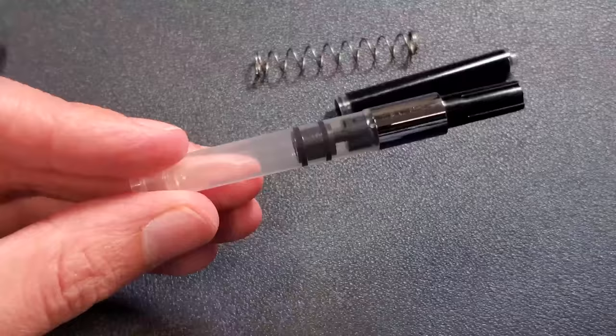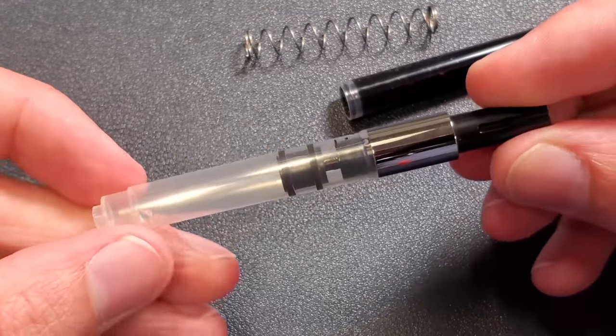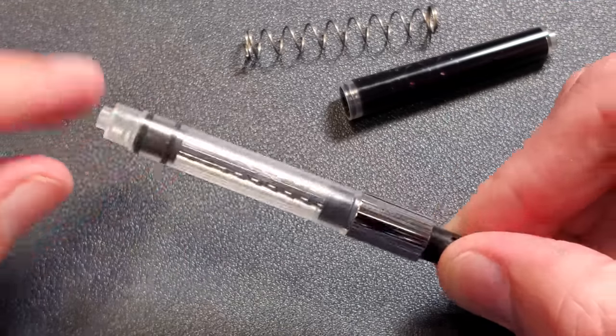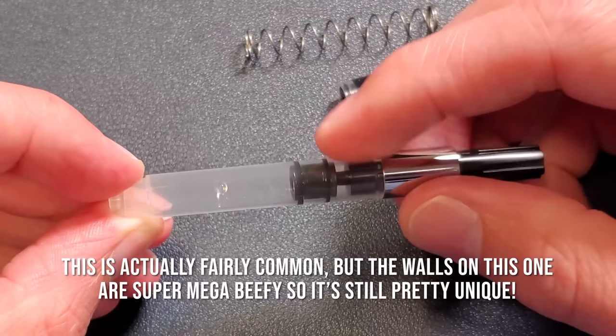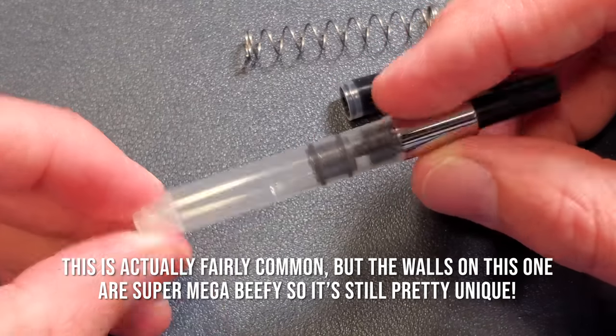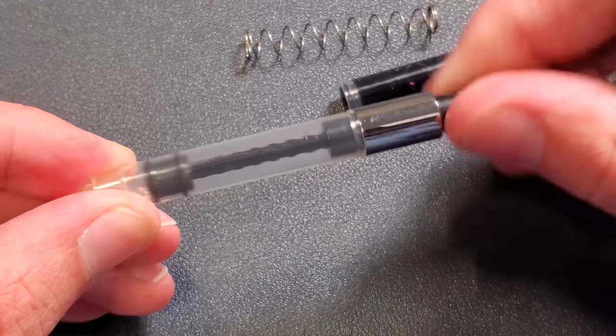And here we have a Twisby converter. Yes folks, this is a converter pen. One of Twisby's first. Look at this though. This converter is a double walled piston converter. This is not something you see on most converters. This looks a lot like the piston gasket that's in their pens. It's got a double wall. So this thing is going to really do its job.